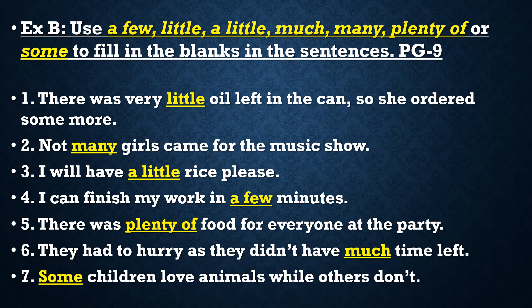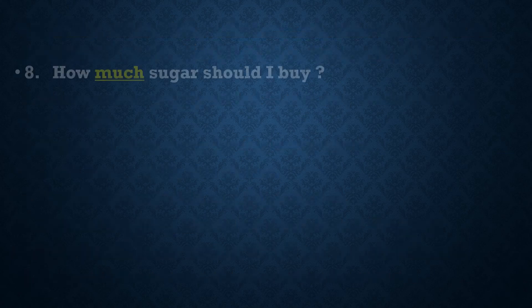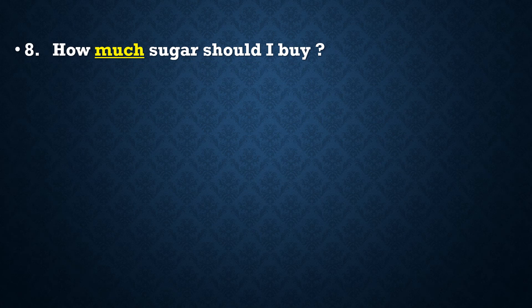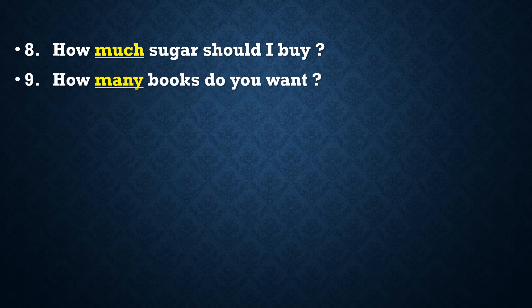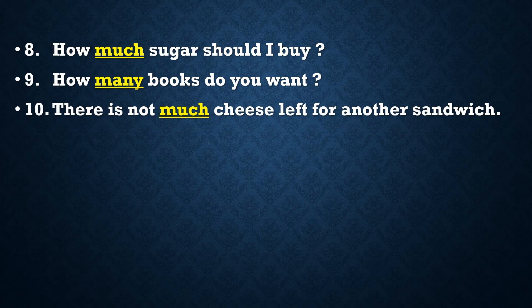Number 7: '___ children love animals while others don't.' Answer: some. Number 8: 'How ___ sugar should I buy?' Answer: much — so the answer becomes 'How much sugar should I buy?' Number 9: 'How ___ books do you want?' Answer: many — 'How many books do you want?' Number 10: 'There is not ___ cheese left for another sandwich.' Answer: much.